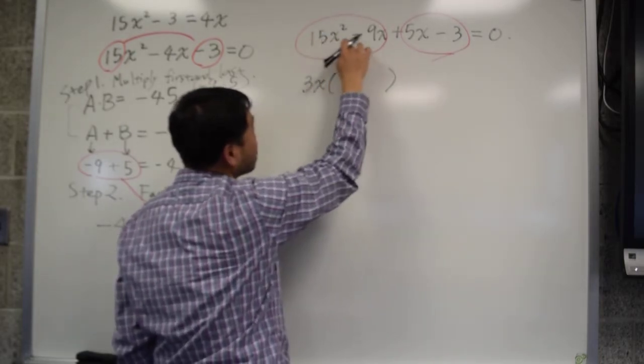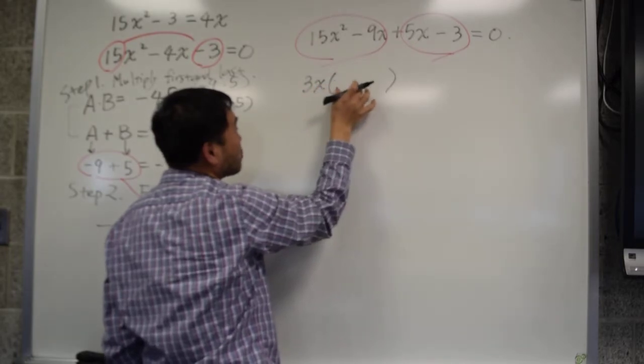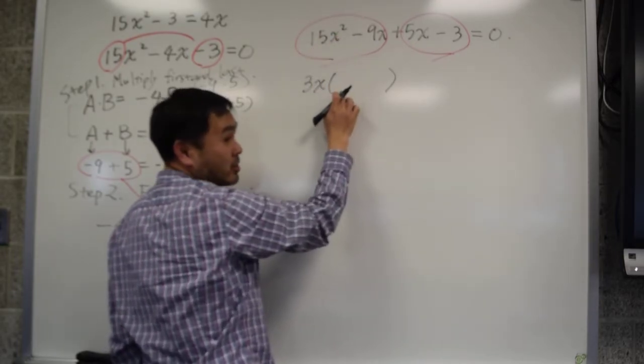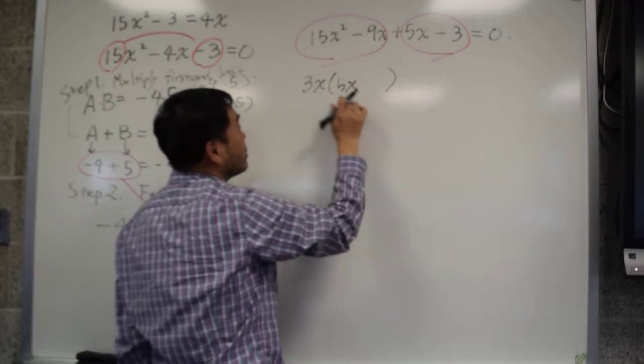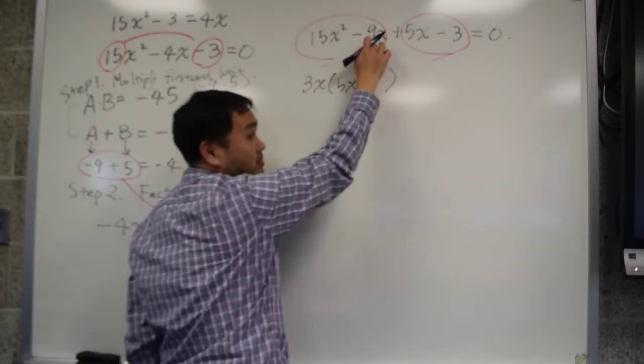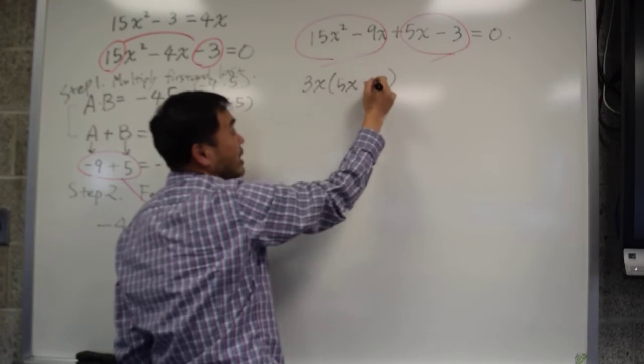So you factor the 3x out. Let's see. If you factor the 3x out, 3x times what gives you 15x squared? What goes in here? What goes in here? 5x, right? 3x times what gives you negative 9x? Minus 3. Minus 3, right? Okay.